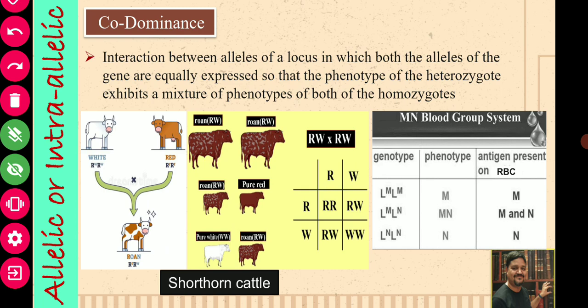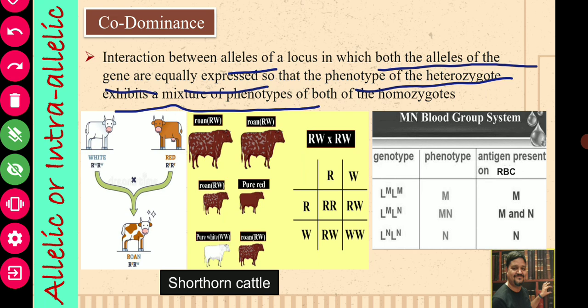In co-dominance, both alleles of the gene will get expressed, but their expression will not be intermixed. It is an interaction between alleles of a locus in which both alleles of the gene are equally expressed, so the phenotype of the heterozygote exhibits a mixture of phenotypes of both homozygotes. For example, in Shorthorn cattle, when white cattle are crossed with red cattle, in F1 generation you will get roan cattle.